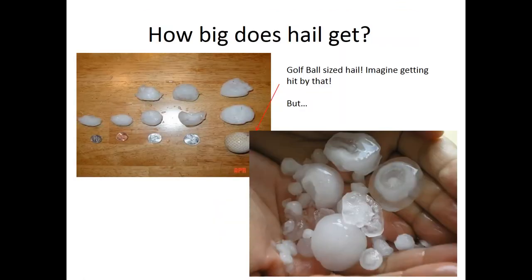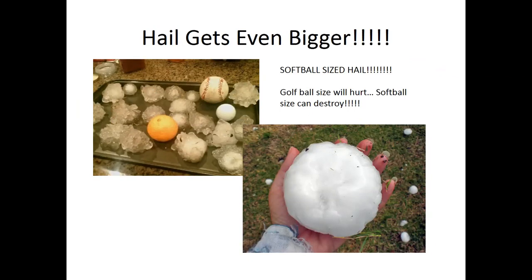Hail can get pretty big. These are images of hail ranging from dime-sized, penny-sized, nickel-sized, and quarter-sized, all the way up to golf ball-sized hail. But hail actually gets even bigger — grapefruit-sized and softball-sized hail, some even bigger than people's palms. So hail can get extremely large.